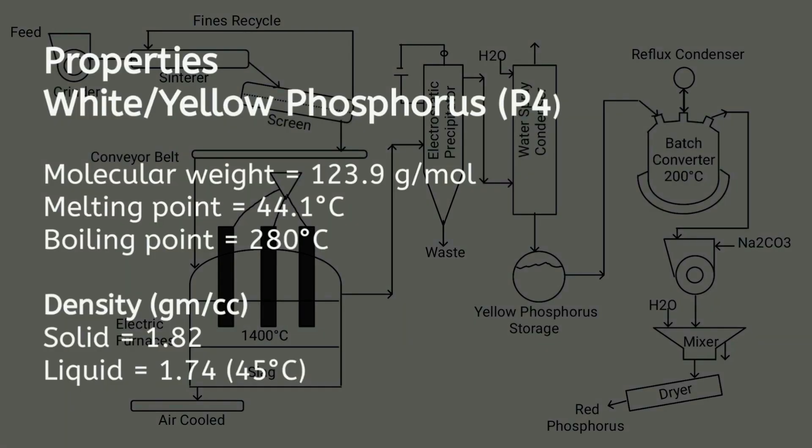The molecular weight of white phosphorus, also known as yellow phosphorus, is approximately 123.3 grams per mole. It has a melting point of 44.1 degrees Celsius and a boiling point of 280 degrees Celsius. The density of white phosphorus in its solid state is approximately 1.82 grams per cc, while its liquid density at 45 degrees Celsius is around 1.74 grams per cc.